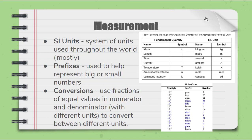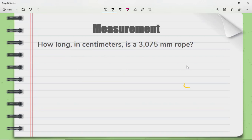Conversions use fractions of equal values in the numerator and denominator with different units to convert between them. Let me show you what I mean by doing an example problem. How long in centimeters is a 3,075 millimeter rope? So if we analyze this problem and we look and we see we have a number of 3,075 millimeters. So that's the number we're going to start with when we do our dimensional analysis. So 3,075 millimeters.